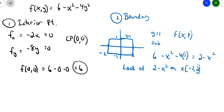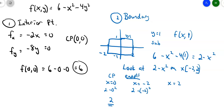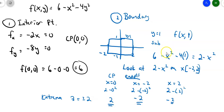We're going to test the critical point and the endpoints. The critical point is at x = 0, so 2 − 0² = 2. The endpoints are x = −2 and x = 2. When x = −2, I get 2 − (−2)² = 2 − 4 = −2. When x = 2, I also get 2 − 4 = −2. So I have extrema at z = ±2 from looking at y = 1.